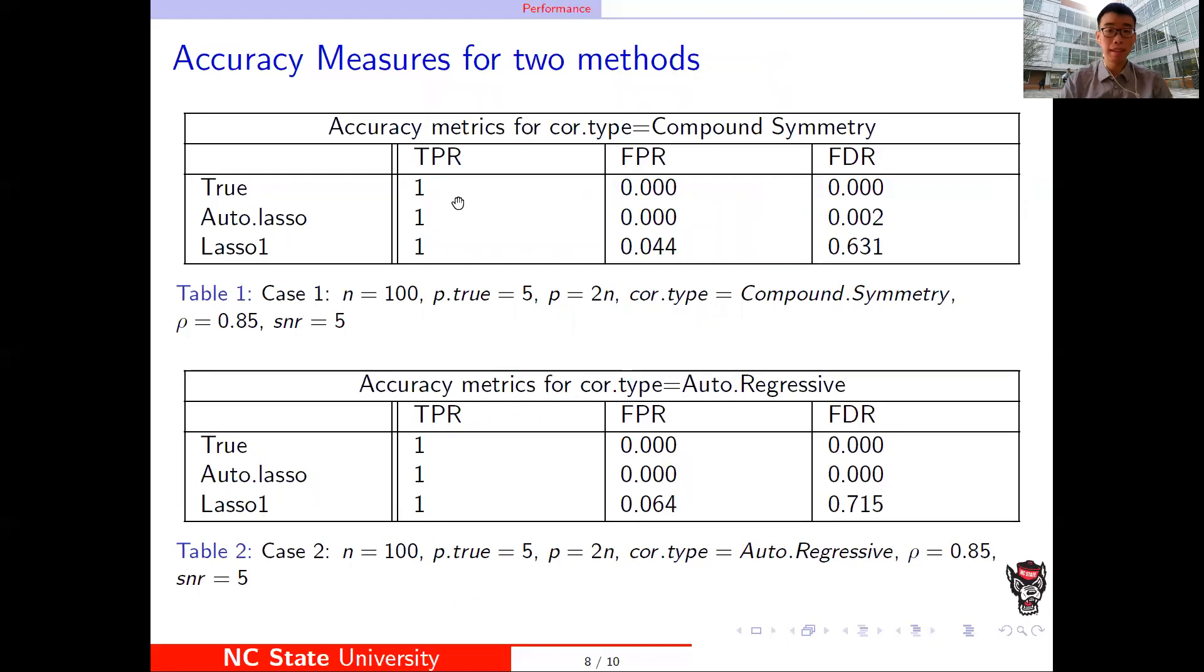This is two tables to compare the accuracy rate. The first one is with the correlation type is compound symmetry. The second one is with the correlation type is autoregressive.